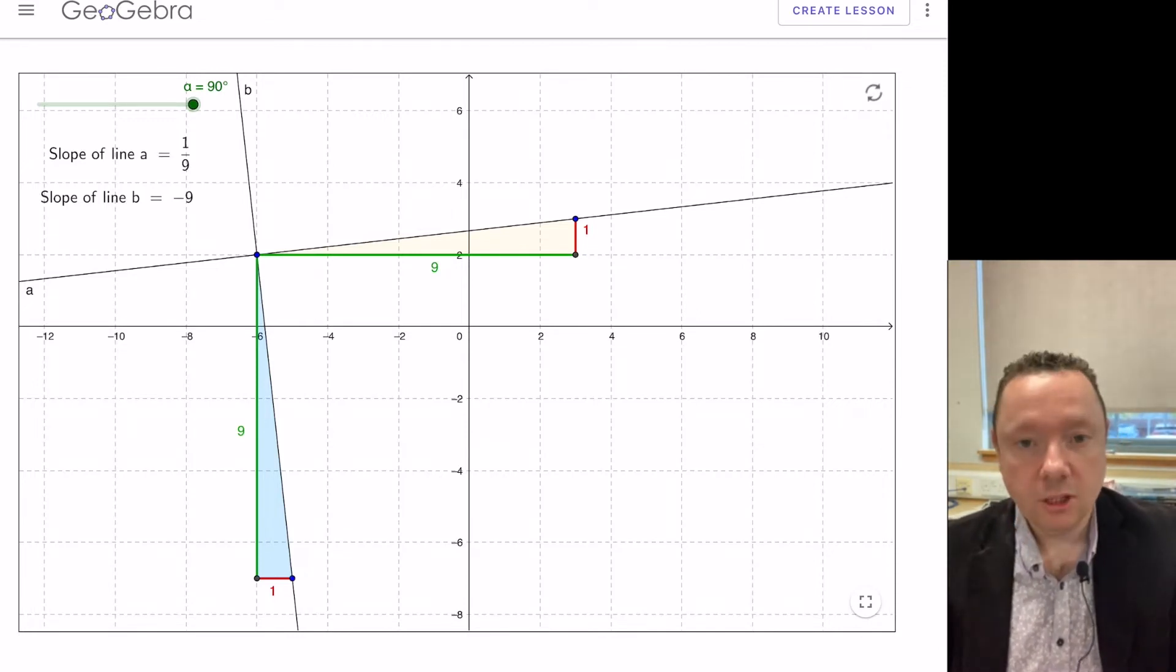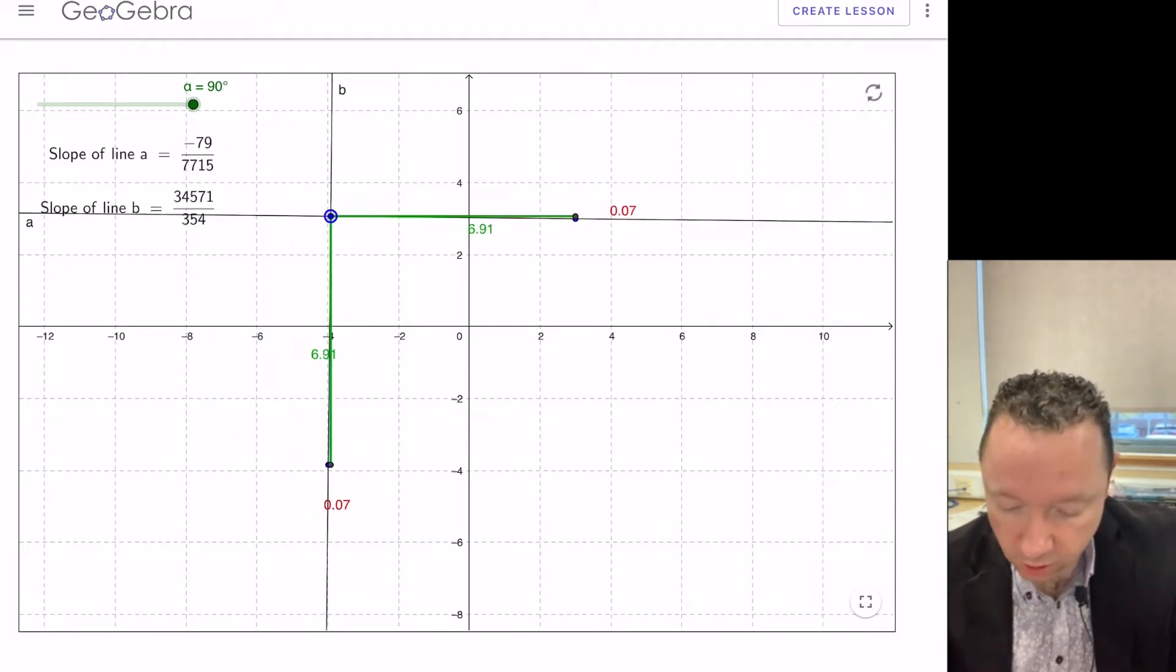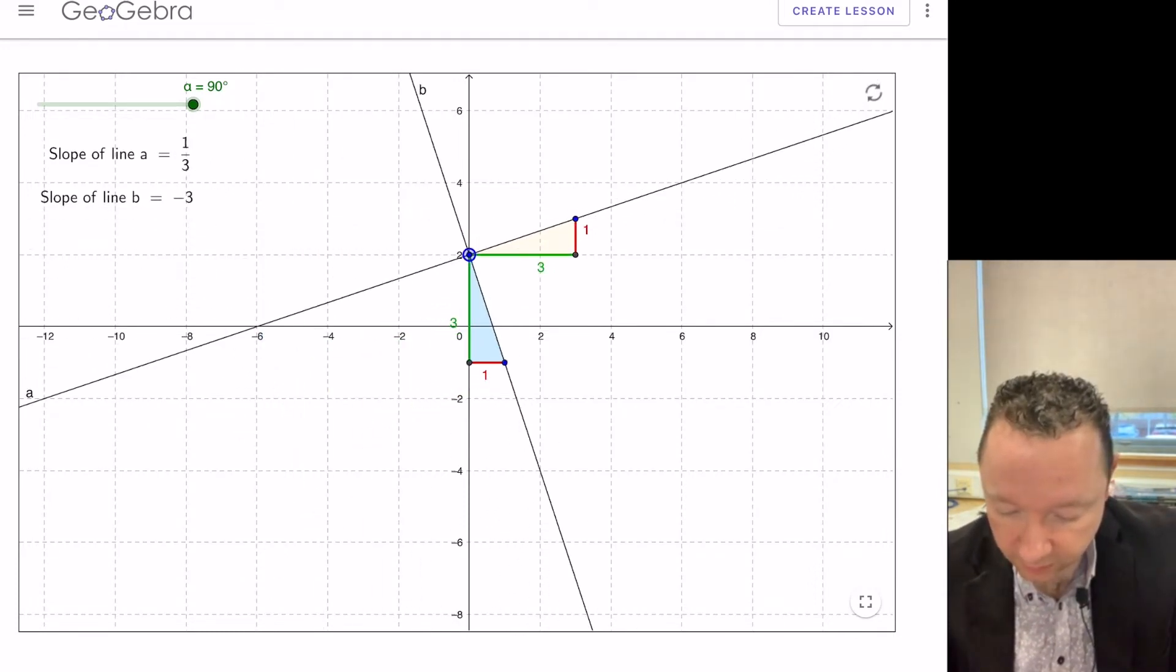Those two lines at right angles to each other should be obvious from looking at it. And that doesn't matter how much you rotate this line round. If I pick a different line, the gradient of that line is one third, but the other line goes sloping down the way is minus three. Minus three times a third is minus one.